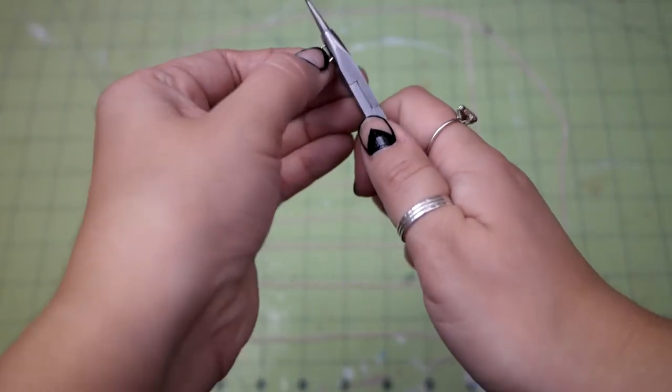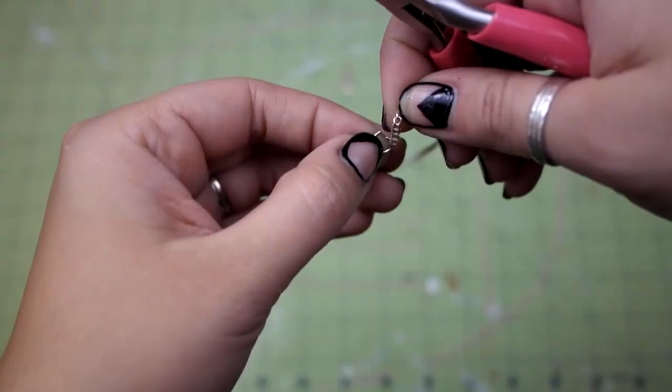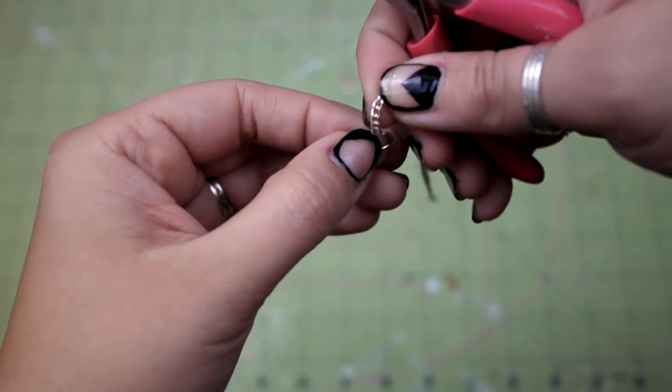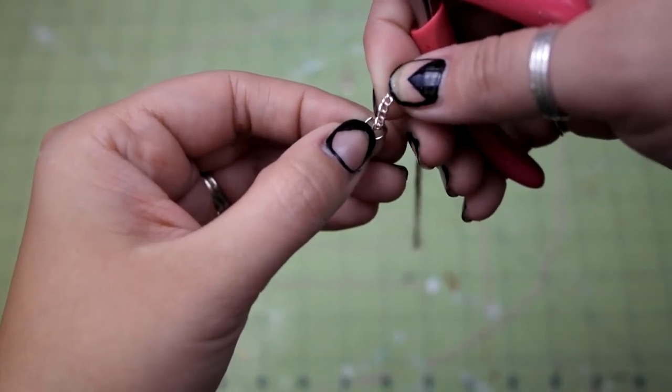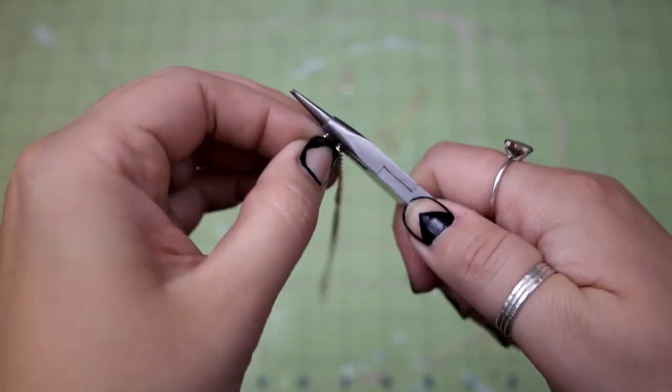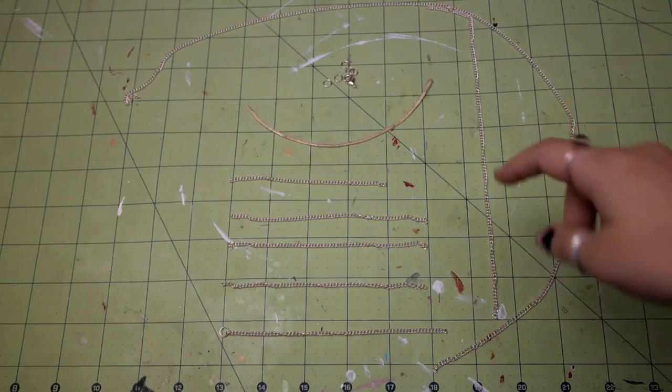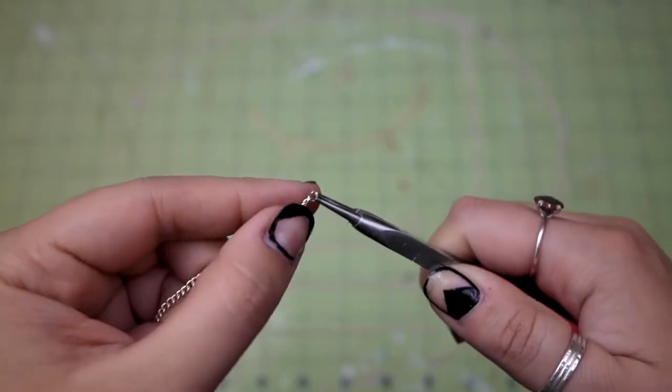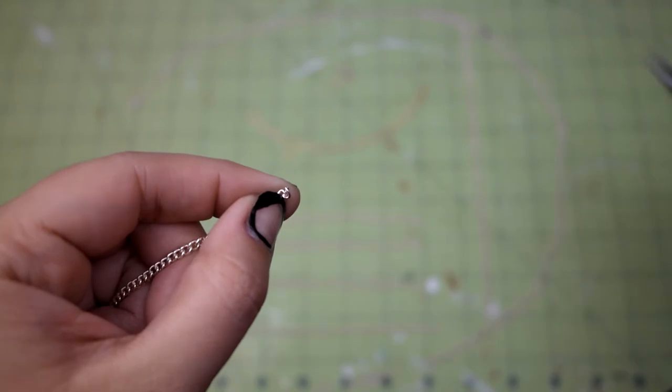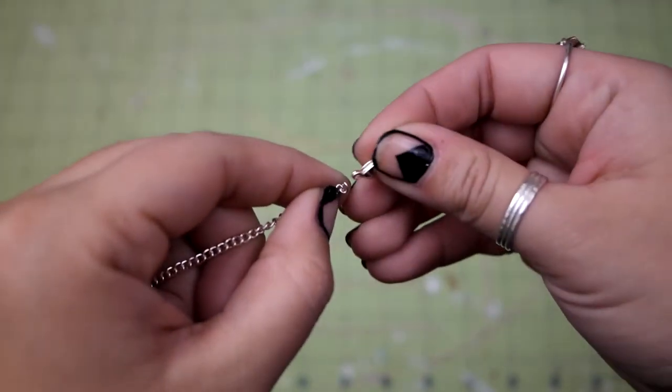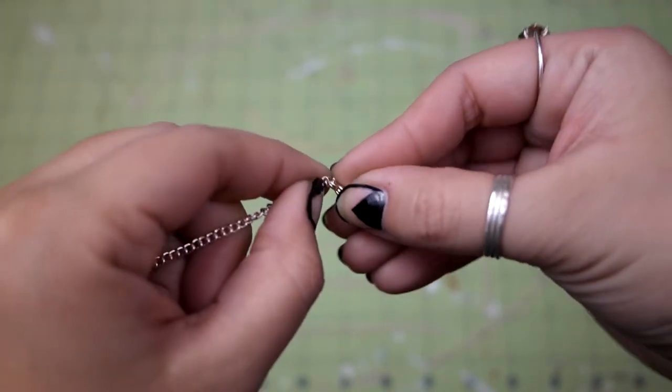Take one of the jump rings and attach it to the end of the five and a half inch piece. Take the lobster clasp and attach it to the four inch piece. I just attached it straight onto the chain using one of the tiny chain lengths, but you can use an extra jump ring here if you like.